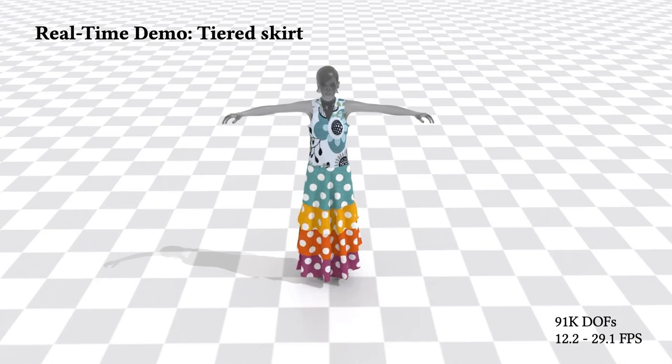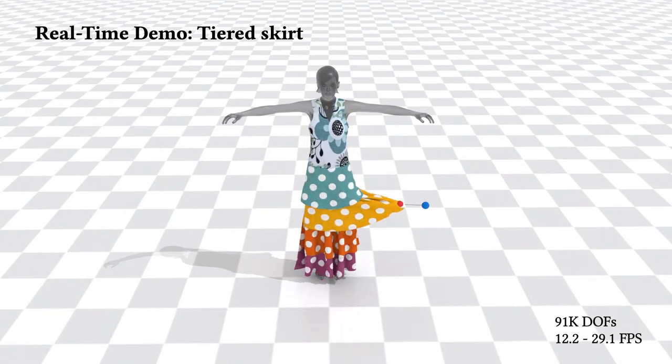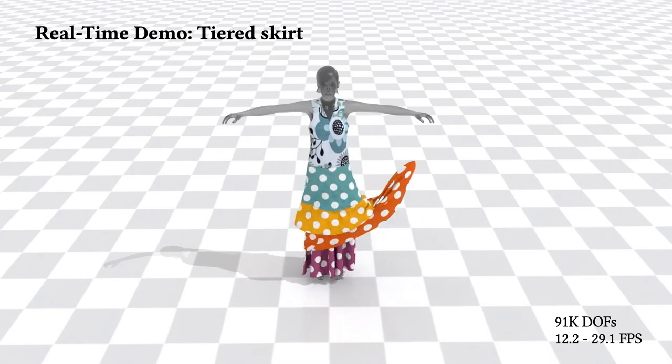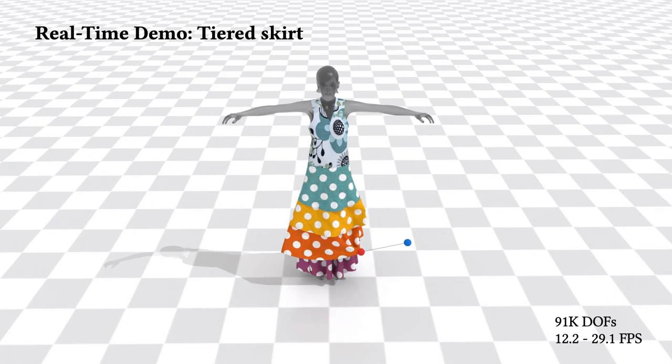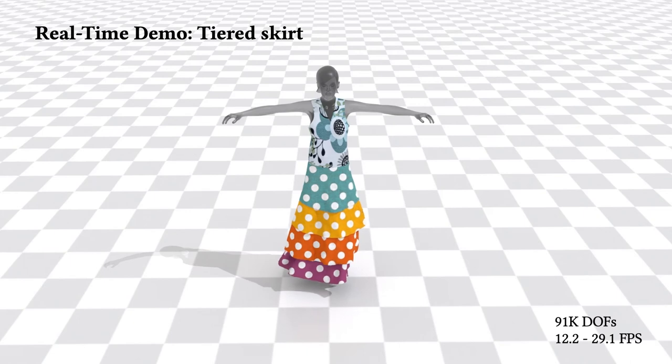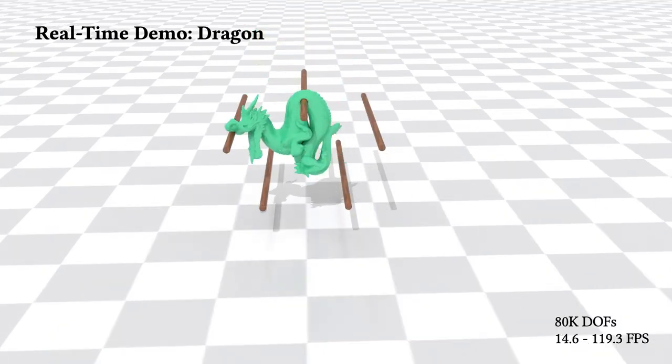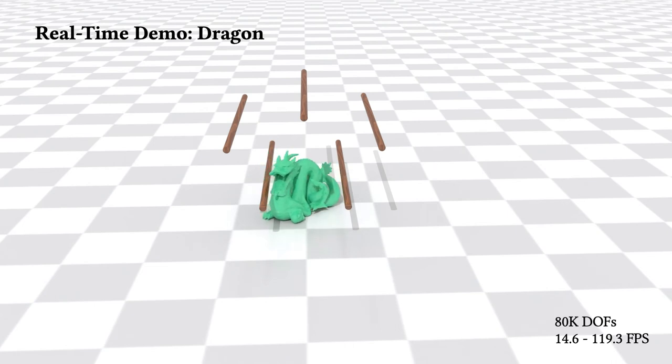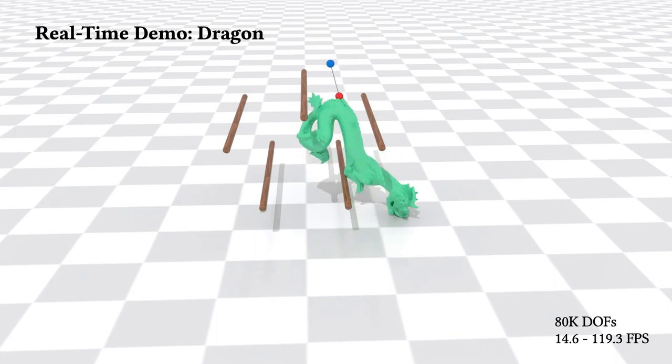Here we demonstrate real-time deformable body simulation by first simulating a multi-layer skirt and using the mouse to apply some drag forces. The simulation is performed in real-time without any visual artifacts. Here we show another real-time demo of a dragon falling onto thick rods. Even with large deformation, our method can still simulate this scene in real-time with more than 100k elements on the dragon.